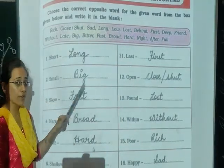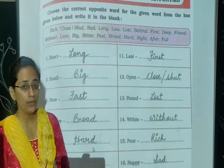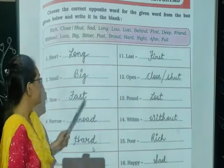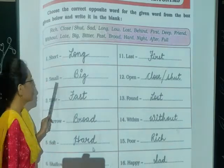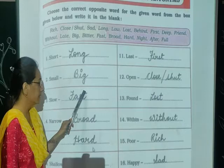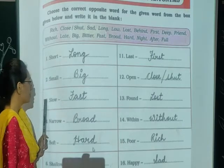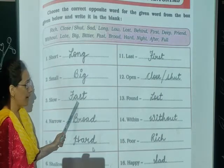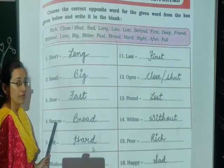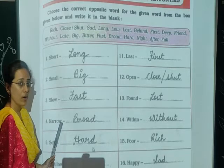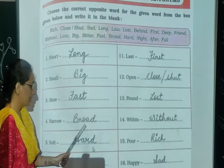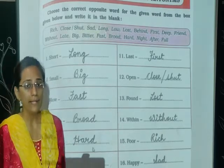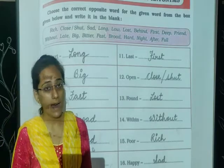First is short — the opposite of short will be long. Second: small — big. The opposite of slow is fast. The opposite of narrow is broad. The opposite of soft will be hard.